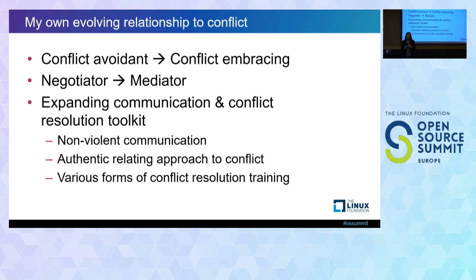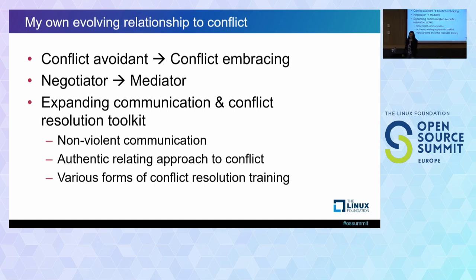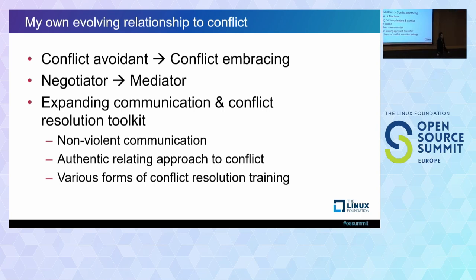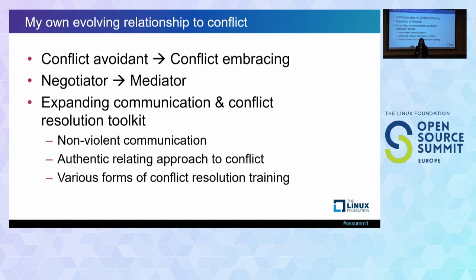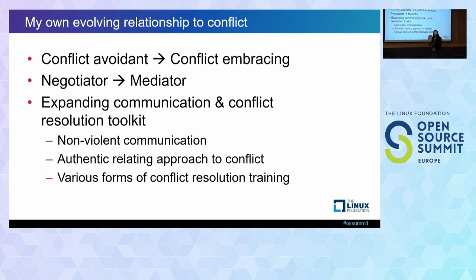My own personal journey and relationship to conflict started with being an incredibly conflict-averse person. Most of my life, when there is conflict, I run and duck in the corner. I'm an attorney but I very consciously chose to be a transactional lawyer — negotiating agreements between parties who want to work together, not litigating disputes. But in the course of my work, I found negotiating led into developing skills as a mediator, and I started doing code of conduct work for foundations and communities, which put me right in the center and heart of conflict.